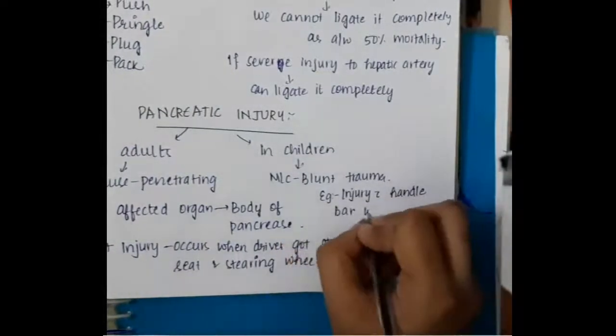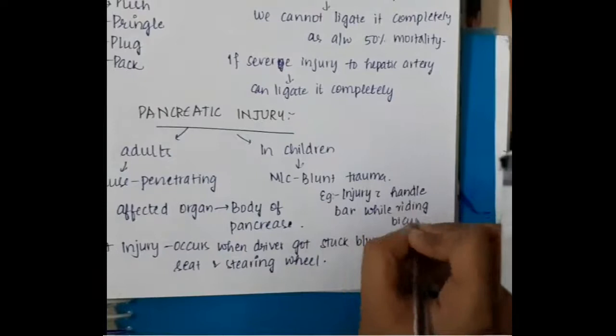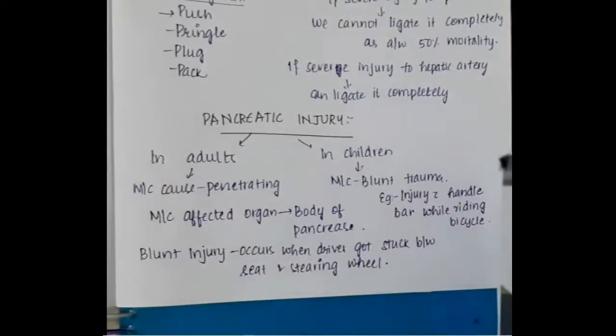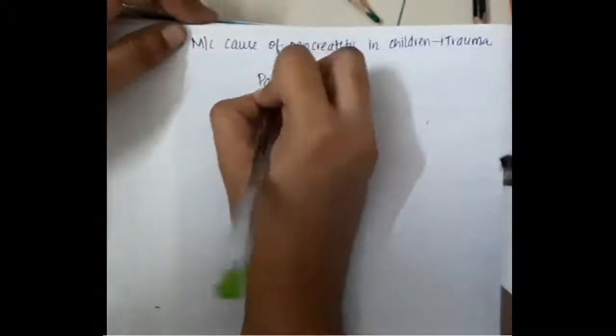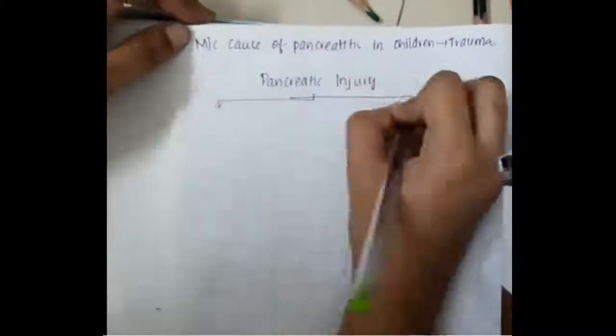In children, pancreatic injury can occur with a handlebar while riding a cycle. The most common organ affected in pancreatic injury is the body of the pancreas. The most common cause of pancreatitis in children is trauma.